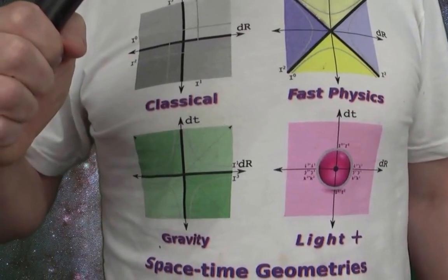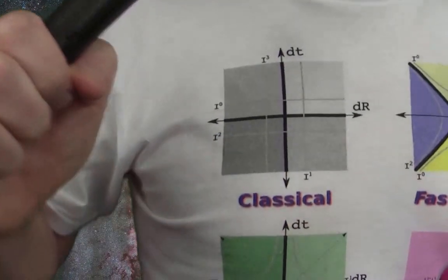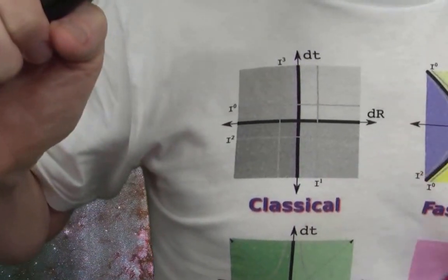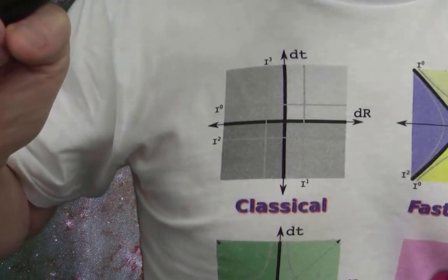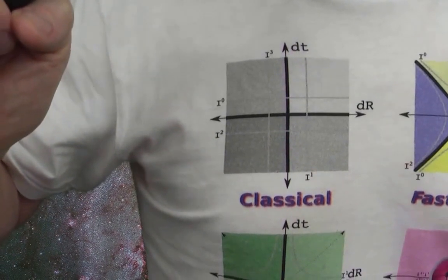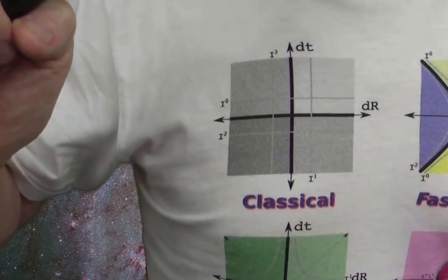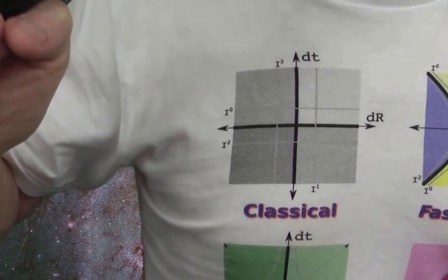So let us deal first with classical physics. Right there in gray. And we see absolute space and absolute time, and they just don't mix with each other like at all. And this is actually an accurate thing to do when your speeds are really quite low.